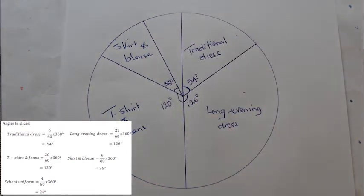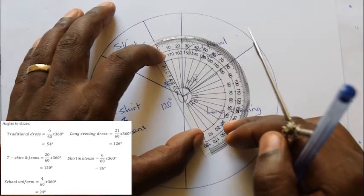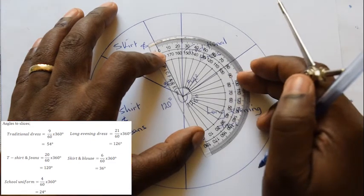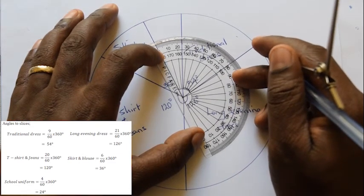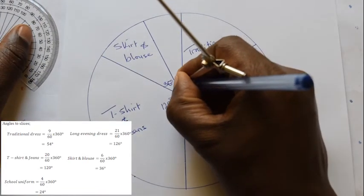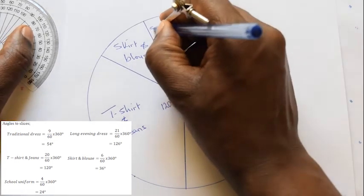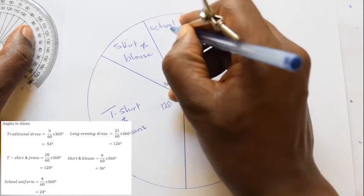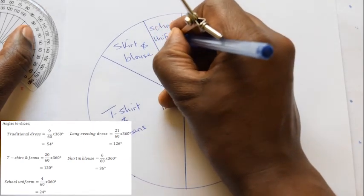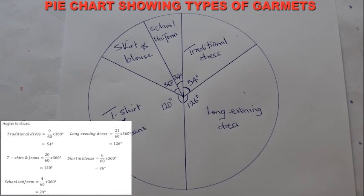School uniform corresponds to 24 degrees. It is always good to check the last slice to confirm the angle. Note that the sum of all angles of all slices adds up to 360 degrees.